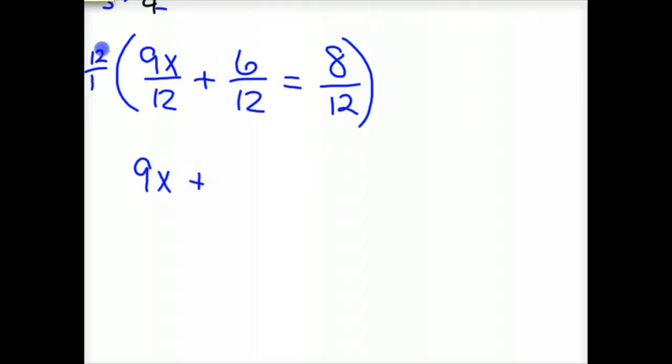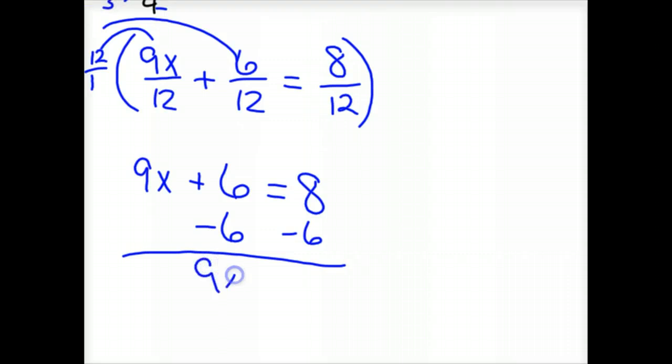12, you know, I'm distributing through—12 times 6/12 is 6, and 12 times 8/12 is 8. And so now it's just a matter of solving it, like a fairly simple equation that it is. So 9x equals 2, x equals 2/9. So we actually came up with a solution.